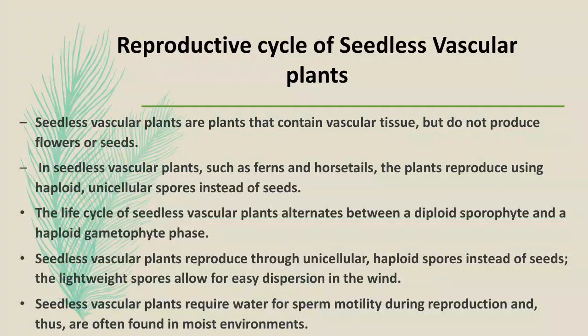Reproductive cycle of seedless vascular plants: seedless vascular plants are plants that contain vascular tissues but do not produce flowers or seeds. In seedless vascular plants such as ferns and horsetails, the plant reproduces through usually haploid unicellular spores instead of seeds.